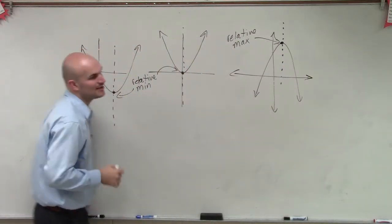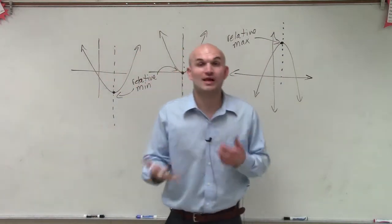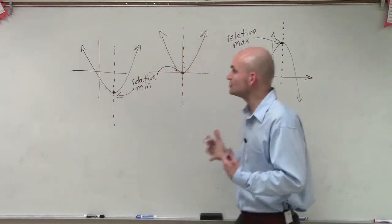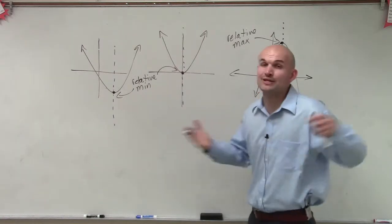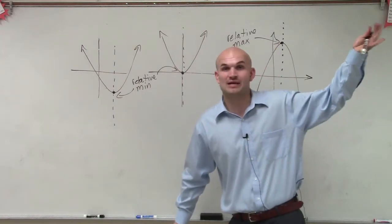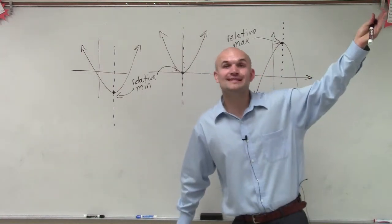So we're going to start tying together axis of symmetry and relative min and max, but I just wanted you to understand, when I'm talking about the relative min and max of a graph, we know that a linear equation has no relative min and max. They go on to infinity and negative infinity.